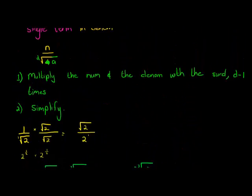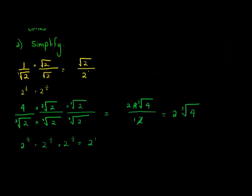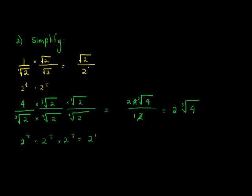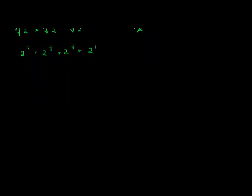So for a single surd term in the denominator, you look at the degree of your surd and multiply by that surd once less than the degree. You do this to both the numerator and denominator, which means you're working with an equivalent fraction — multiplying the numerator and denominator with the same term is allowed.